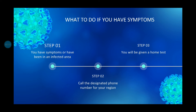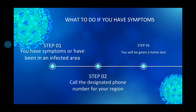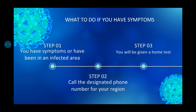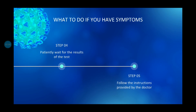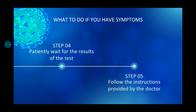What to do if we have symptoms of coronavirus? First, find out whether you have symptoms of coronavirus or have been in an infected area. Then call the designated phone number of your region. They will conduct a home test by coming to your home. After the home test, patiently wait for the results, and once you get them, follow the instructions provided by the doctor.